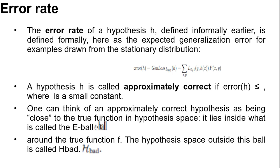Here, error H equals generalization loss L 0 by 1 of H equals summation of L 0 by 1 Y comma H of X times probability of X comma Y. Here you can see the equation. In other words, error H is the probability that H misclassifies a new example, and this is the same quantity being measured experimentally by the learning curve shown earlier.